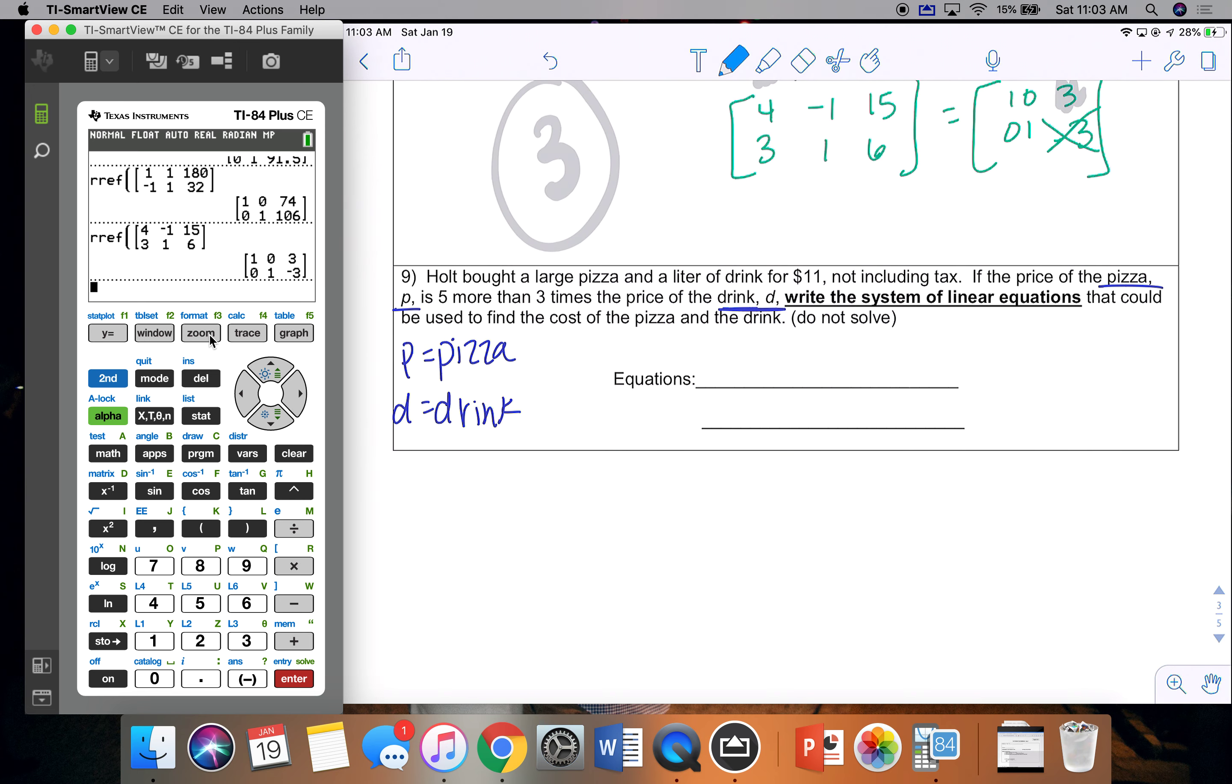So first equation, we have a large pizza and a liter of drink for $11. 11 is a total. And we don't know how many, or yeah, we do. A is 1, so 1P and a liter of drink, so 1D equals 11. Remember, once I use info, I can't use it again. So the other info I know is P is 5 more than 3 times D. So P is means equals 5 more than 3 times D. And that would be how you'd set that problem up.